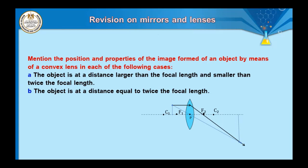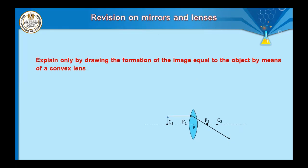Case b: the object is at a distance equal to twice the focal length — at the center. The first ray comes parallel to the principal axis and refracts through the focus. The second ray passes through the optical center without refraction. The intersection point is at the center, and the image is formed real, inverted, and equal in size.